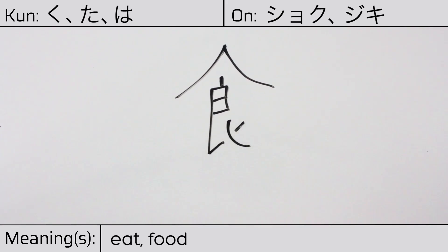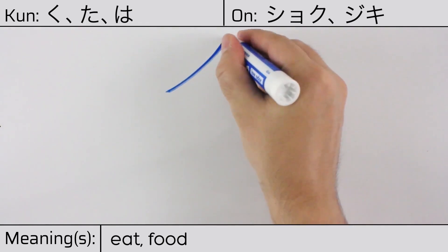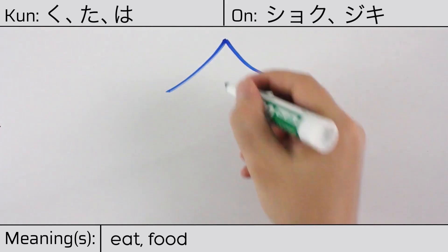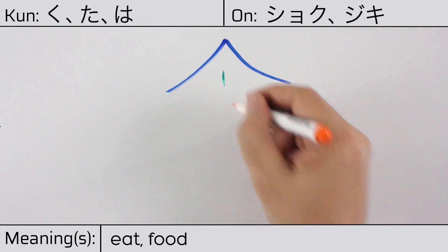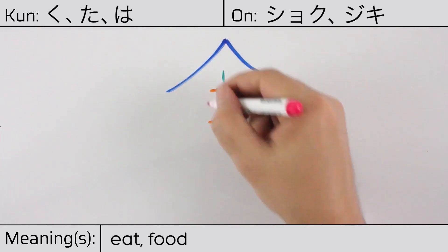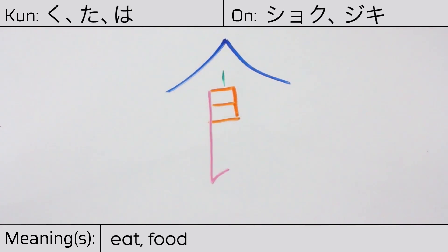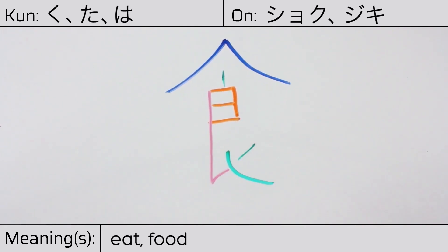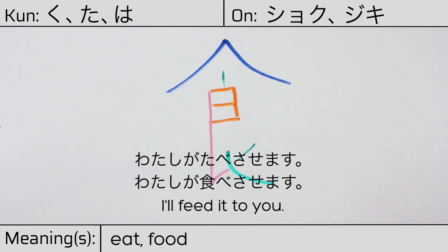This character is made up of the following radicals or parts: this hat or lid radical, which is a stylized version of hito or person, known as hitoyane, and the character meaning good. You can remember this kanji by the following hint: eating is good for people. Our example sentence is: Watashi ga tabesasemasu — I'll feed it to you.